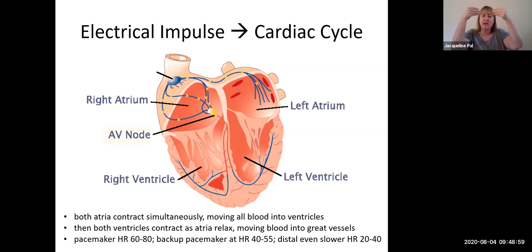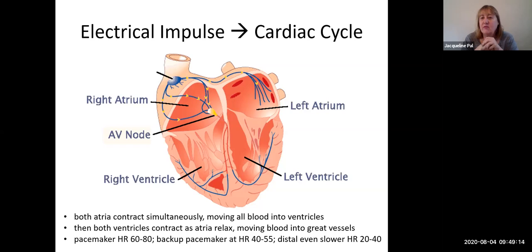What happens is both atria contract simultaneously as that impulse travels through them simultaneously. And then when they contract, whatever blood is in the atria moves into both ventricles. And then as that impulse travels down through the bundles into the Purkinje cells, the two ventricles are going to contract at the same time, moving the blood into the pulmonary trunk and the ascending aorta.